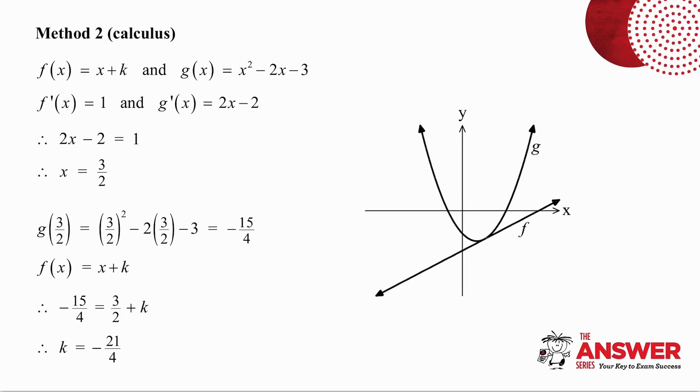So at the point of intersection, my x value is 3/2. I then take that x value and I substitute into g, the parabola, and I get that the y value is -15/4. So the point of intersection is given there.